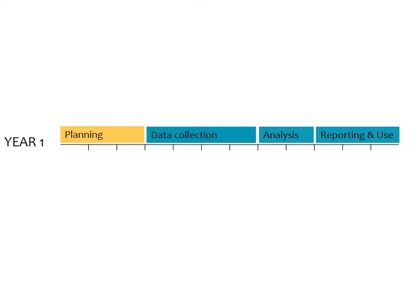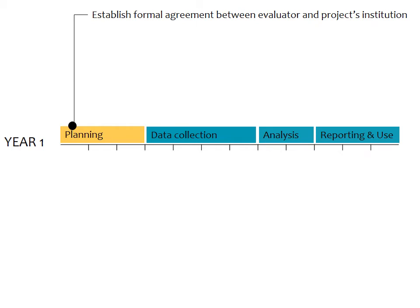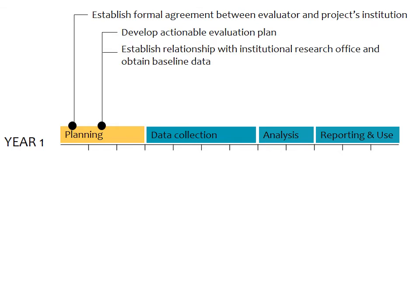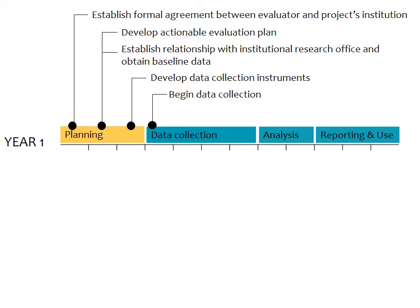In year one, some time needs to be dedicated to planning the evaluation. This will involve establishing a formal agreement between the evaluator and the project's institution. Then the evaluator will work with the project to develop an actionable evaluation plan, because the page and a half dedicated to evaluation in the proposal just doesn't have enough detail to really set things in motion. This is also a time to establish a relationship with the college's institutional research office to find out what data they'll be able to provide, how best to work with them, and even to start obtaining baseline data. Most likely some data collection instruments or protocols will need to be developed and tested during this planning phase as well. Then after all that, primary data collection can finally begin.